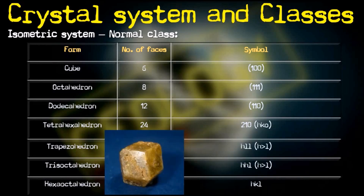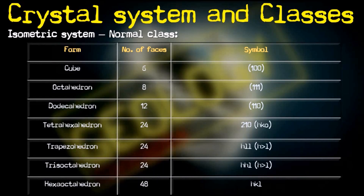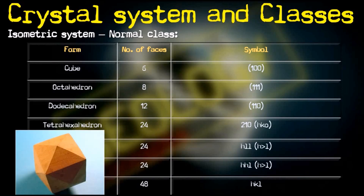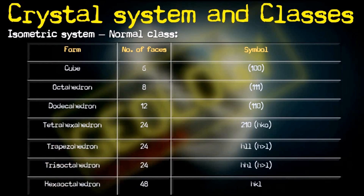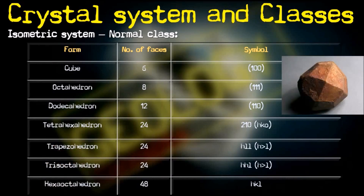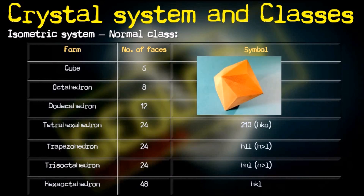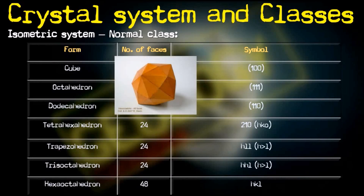Then there is the dodecahedron, which has 12 faces, each face being a rhombus. Next is the tetrahexahedron, which has 24 faces and each face is a tetragonal pyramid. The trapezohedron also has 24 faces, each being a trapezium. The trisoctahedron contains 24 faces where each face is an isosceles triangle. The last form, the hexoctahedron, has 48 faces and each face is a scalene triangle with symbol {hkl}.